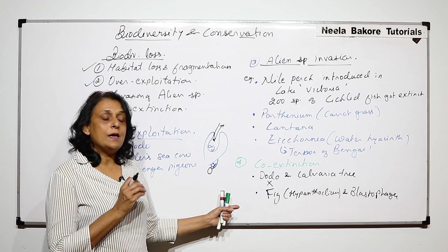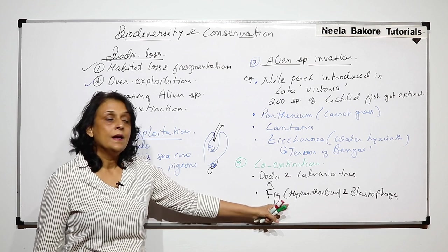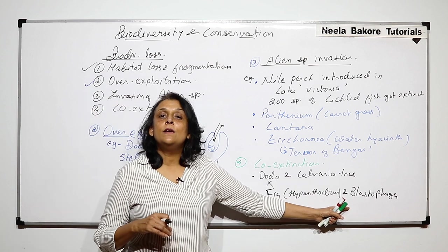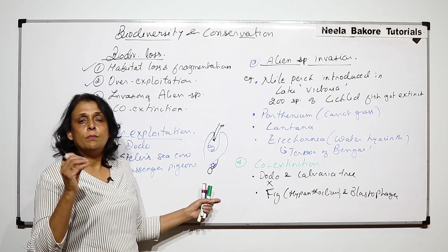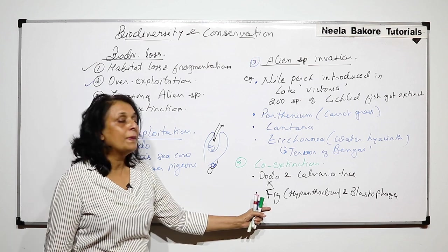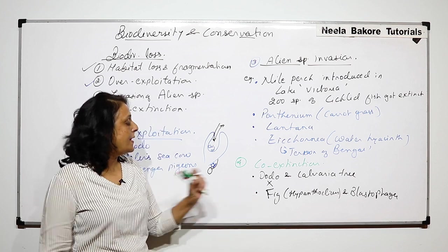If fig gets extinct, Blastophaga automatically will get extinct. That is why we are using the word co-extinction. Pollinator and plant relationships are very important.